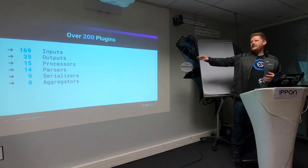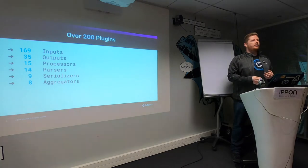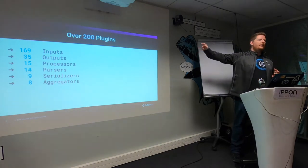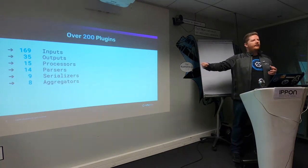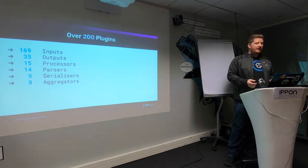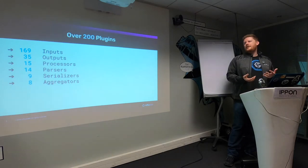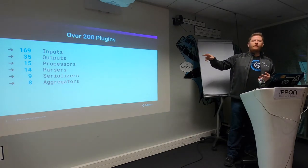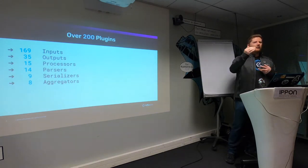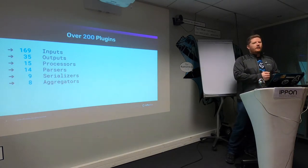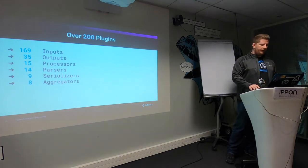Processors, parsers, serializers, and aggregators all allow you to transform those metrics in memory before they leave Telegraph to one of the outputs. There are a lot of plugins here, and it is one of our most contributed-to open source projects, because it's actually really easy for anyone to write a new input, output, or processor. The actual amount of code you need to write is under 200 lines for a basic plugin.